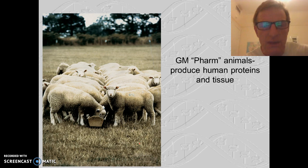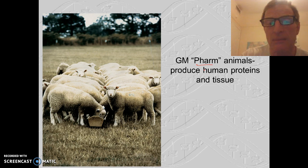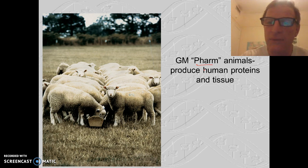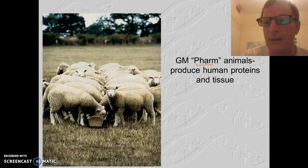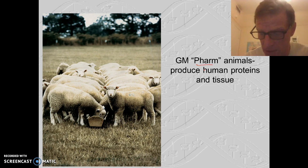Here are some sheep called 'pharm animals' — spelled p-h for pharmacy. They have human genes inserted to produce human proteins. In this case, these sheep produce an anti-clotting protein. Getting this protein from humans would require thousands of plasma donors, but a flock of these sheep can produce the equivalent, saving huge amounts of money and producing really important human drugs.